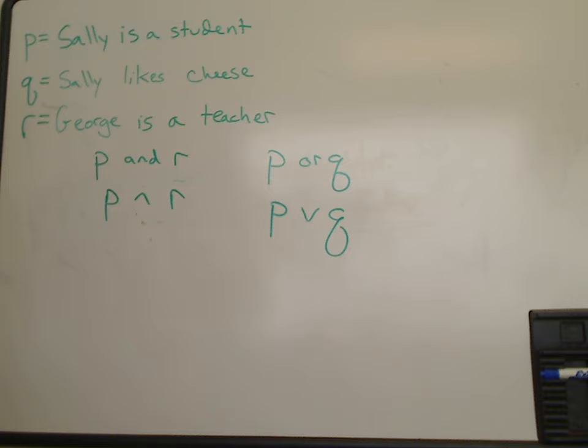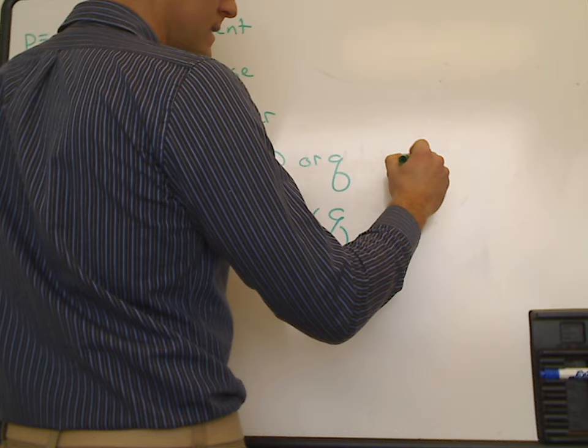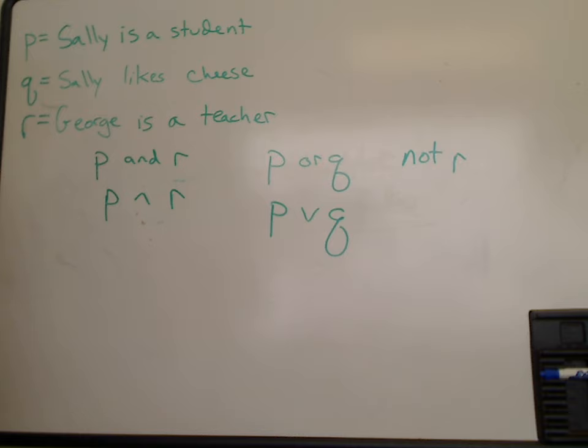And the other basic symbol that we can use is not. So if we want to say not R, if we want to say George is not a teacher, we can represent that symbolically using this little tilde before the variable that we use. So tilde R means George is not a teacher.